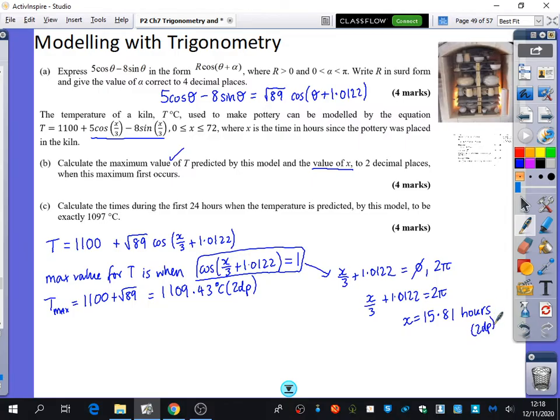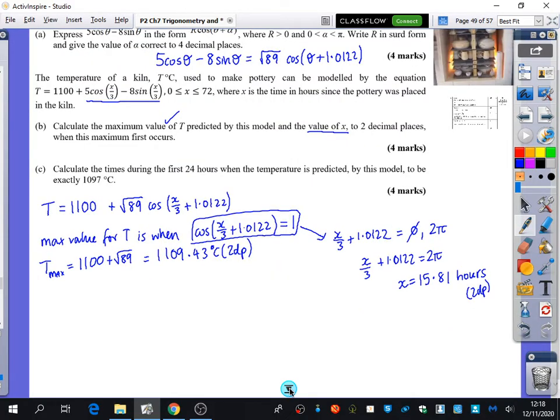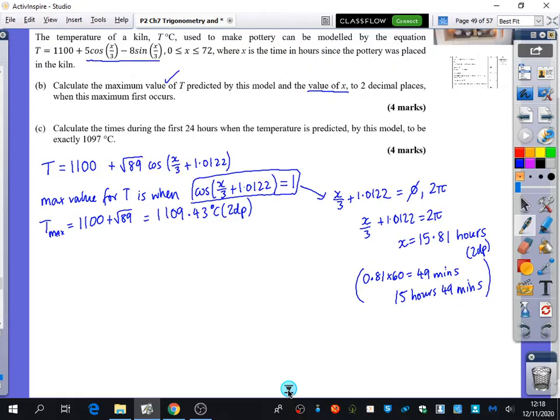It does want that in decimal places to two decimal places, which we've done here. But I'm just going to imagine, because sometimes questions like to do this, they might say give it in hours and minutes. How would I convert this from hours to hours and minutes? I'm going to times this extra bit by 60. If I wanted to put it in minutes, I would do the 0.81 × 60, which is 49 minutes to the nearest minute. So it's actually 15 hours and 49 minutes. They haven't asked for that in the question, but sometimes they do ask you that. I'm just going to put brackets around that because they haven't asked, but we might want to do that in the future.